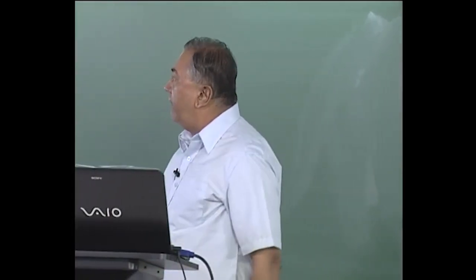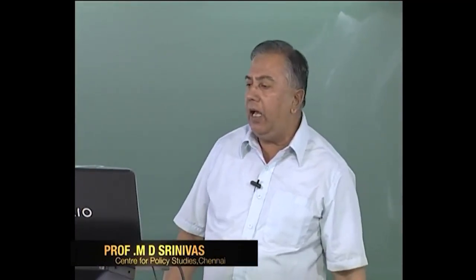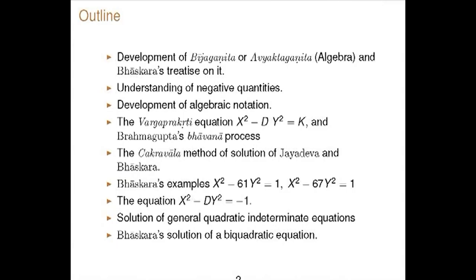We will discuss the Vijayanita, or Avyaktaganita, mainly Bhaskara's treatise. We will quickly look at the development of algebra, how negative quantities were understood, and how algebraic notation developed. We will mainly talk about the Varga Prakriti equation and particularly the Chakravana method of solution, and also some other interesting equations that Bhaskara solved in his Vijayanita.